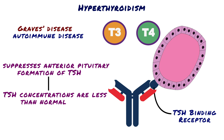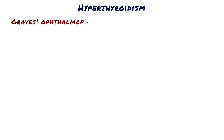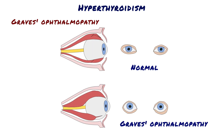Graves' disease can have some additional clinical features that distinguish it from other causes of hyperthyroidism, and Graves' ophthalmopathy is one of them. In Graves' ophthalmopathy, the volume of the retroorbital connective tissues and extraocular muscles is increased due to marked infiltration of the retroorbital space by mononuclear cells, predominantly T cells, inflammatory edema and swelling of extraocular muscles, accumulation of extracellular matrix components, and increased numbers of adipocytes. These changes displace the eyeball forward, potentially interfering with the function of the extraocular muscles.